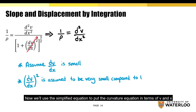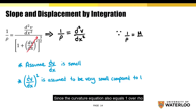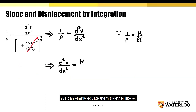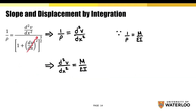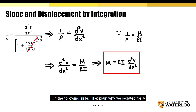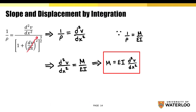Now we'll use the simplified equation to put the curvature equation in terms of v and x. Since the curvature equation also equals 1 over rho, we can simply equate them together. Now, if we rearrange the equation and isolate for M, we'll end up with this equation here. On the following slide, I'll explain why we isolate for M.